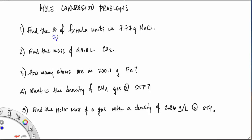Remember to write down our given quantity first, and then we can set ourselves up for our first conversion factor. When we do any of these problems, the mole is the central concept. So we need to be converting to moles if we're not in moles. We're in grams, so one mole goes on the top of the conversion factor, and the molar mass of sodium chloride, 58.5 grams, goes on the bottom.